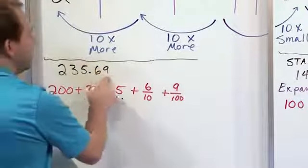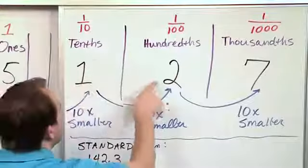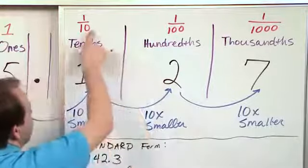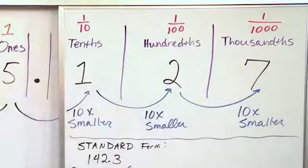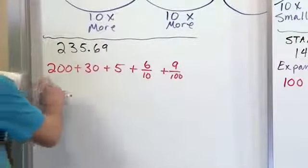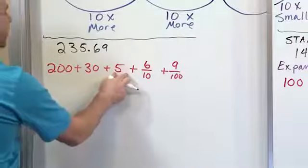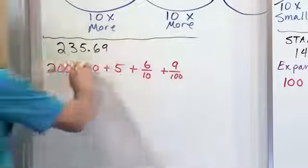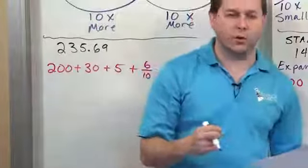We also have to figure out what the nine is worth. It's in the hundredths place — there are nine of them, so it's nine one-hundredths. The six is worth six-tenths and the nine is worth nine one-hundredths. So the complete expanded form is: 200 plus 30 plus 5 plus six-tenths plus nine one-hundredths. This is the complete value of the whole number.